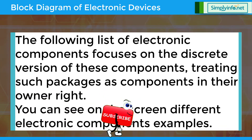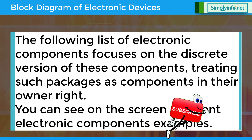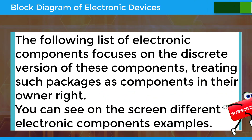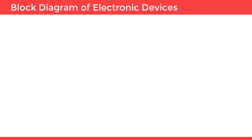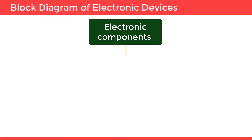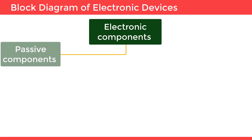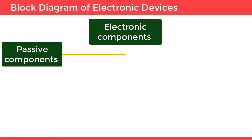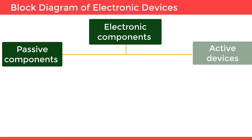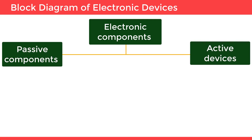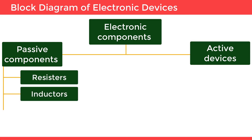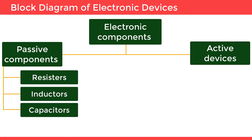You can see on the screen different electronic component examples. Electronic components are divided into two types: passive components and active devices. Passive components include resistors, inductors, and capacitors.